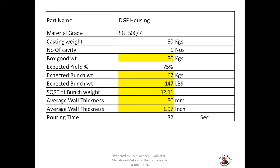Example number three is again a similar casting — grade SG 500/7, DFG housing, casting weight 50 kg, one cavity, good weight 50 kg, expected yield 75%, expected bunch weight 67 kg — that is 147 LBS. The square root of the bunch weight is 12.11.